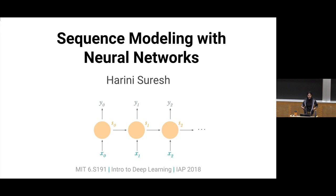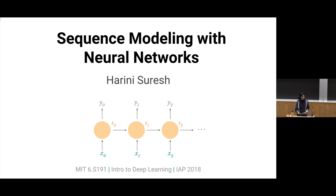Hi everybody, my name is Harini, and I'm going to be talking about how to use neural networks to model sequences. In the previous lecture, you saw how you could use a neural network to model a dataset of many examples. The difference with sequences is that each example consists of multiple data points. There can be a variable number of these data points per example, and the data points can depend on each other in complicated ways.